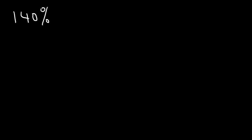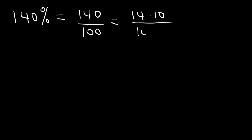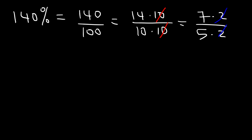Sometimes you may have a percentage that exceeds 100. When you have those, you can convert your answer to an improper fraction, or sometimes you may need to convert it to a mixed number. Here's an example: convert 140% into a fraction. So 140% is basically 140 divided by 100. The first thing we need to do is reduce the fraction. 140 is 14 times 10, and 100 is 10 times 10, so we can cancel a 10. But we can reduce it further — 14 is 7 times 2, and 10 is 5 times 2, so we can get rid of a 2. As an improper fraction, 140% is 7 over 5.